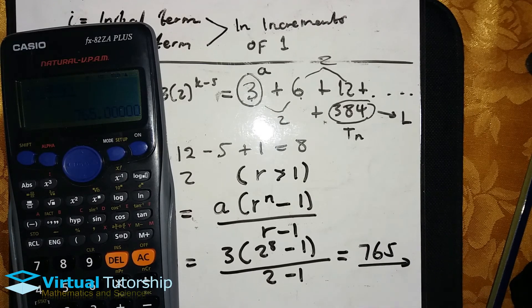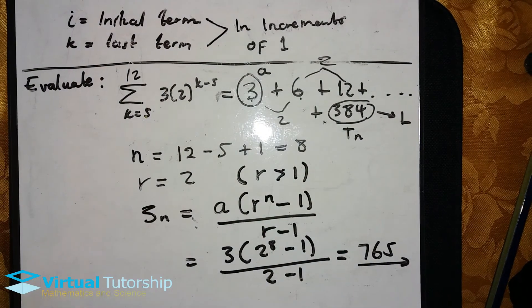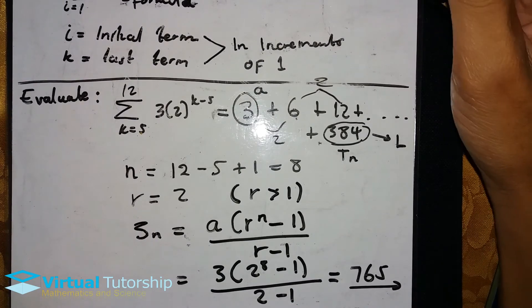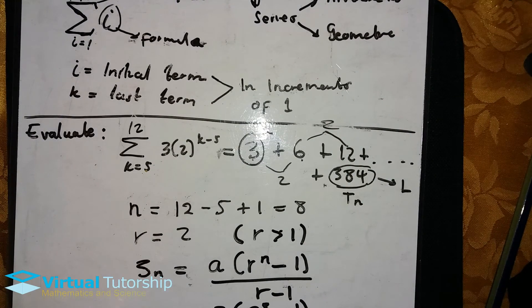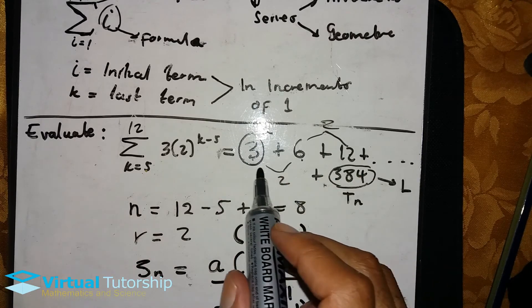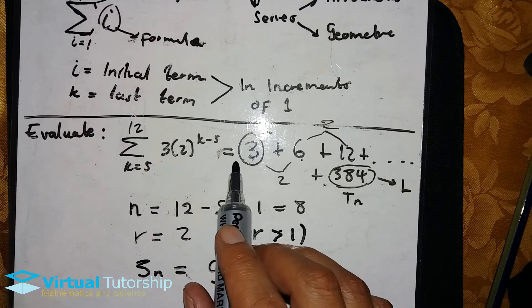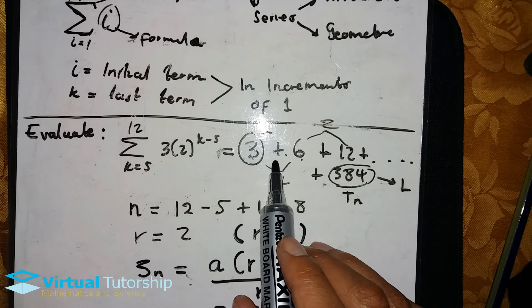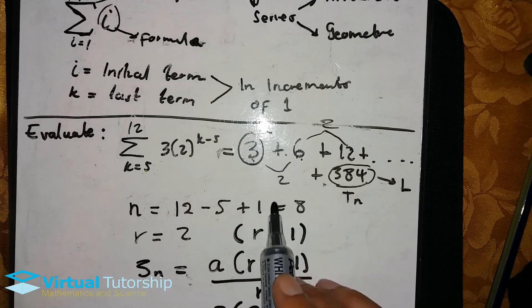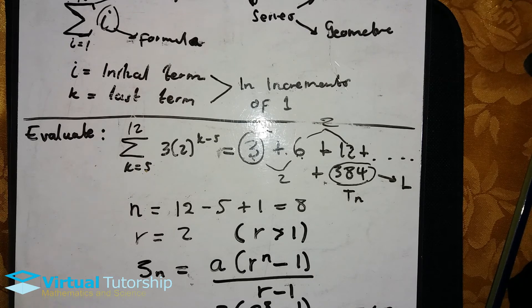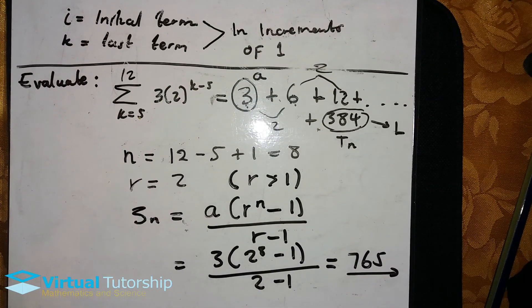So the answer is 765. So for this sigma notation, when you expand it, expand it to four terms—the first three and the last term. That's all. Calculate your n value. What is useful along the way? Next, let's say after that we identify whether it's an arithmetic or a geometric series. Then we use the appropriate formula.